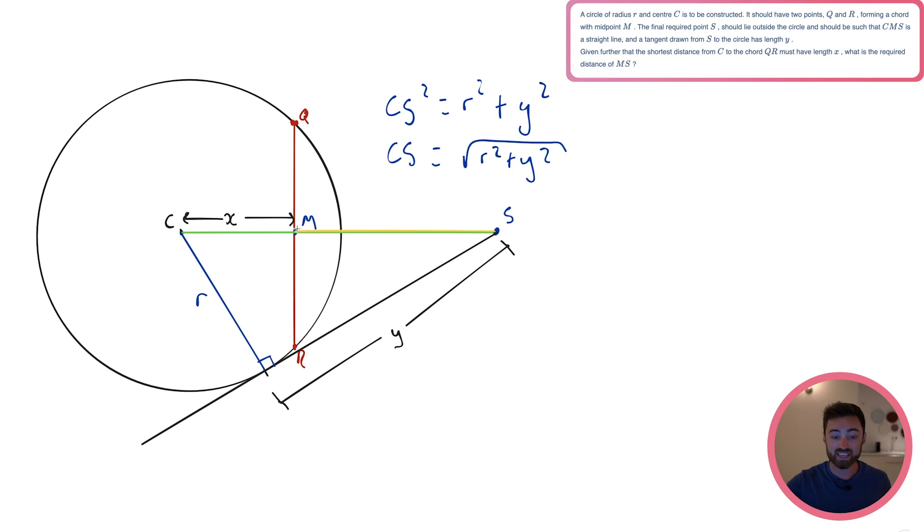And then what do I want? Well, I want this thing in yellow, don't I? Which, why don't we call it Z? Because we've already used X and Y. And that's going to be my final answer. So Z. Well, if I know that the whole line CS is this, all I need to do is take away this X now. So Z is actually going to equal the square root of R squared plus Y squared minus X. And that is going to be your final answer.